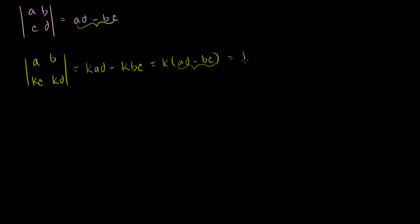So this is equal to K times the determinant of A, B, C, D. When you multiply just one row — not the entire matrix — by some scalar, the resulting determinant will be the original determinant times that scalar.